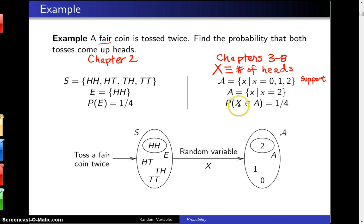In this case, the probability X as an element of A is one-fourth, because the probability of getting two heads is one out of four for the same reason as in this particular solution to the problem. So to draw a diagram of this, over on the far left-hand side we have the random experiment, which is tossing a fair coin twice.